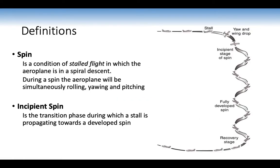A spin is a condition of stalled flight in which the aeroplane is in a spiral descent — the aeroplane will be simultaneously rolling, yawing, and pitching. It's quite dangerous, and we won't be practising spins in this lesson as our aeroplanes aren't approved for it. The incipient spin is the transition phase during which a stall is propagating towards a developed spin — incipient means the starting stage. In the training area we'll look at a wing drop, where one wing stalls before the other, and how to immediately recover to prevent it leading to an incipient spin.